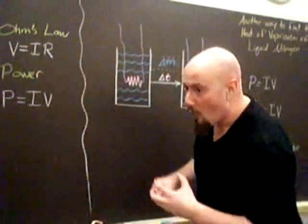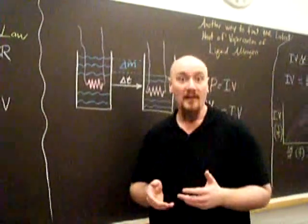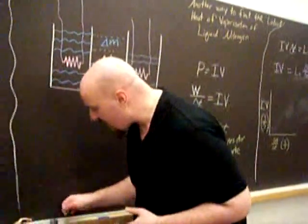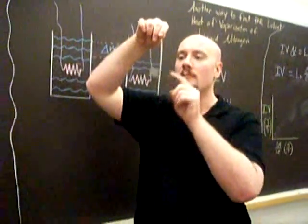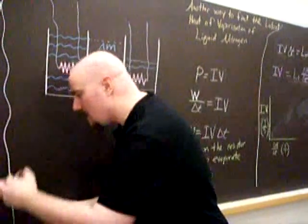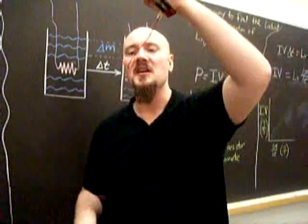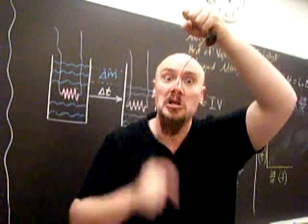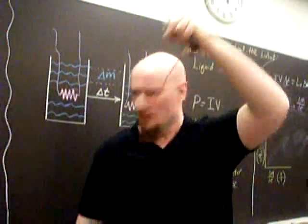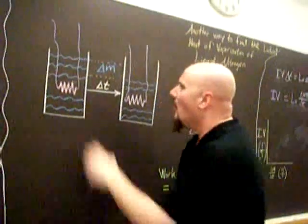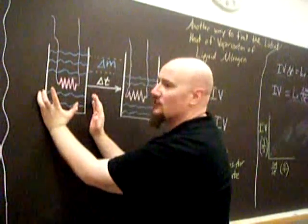So once again, we're looking for the latent heat of vaporization of liquid nitrogen. But instead of our heat source being an aluminum cube, our heat source will be a carbon resistor that will have electric current going through it. So this resistor will be inside of a vat of liquid nitrogen.